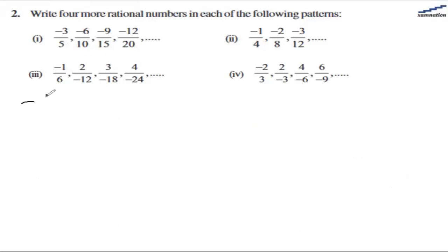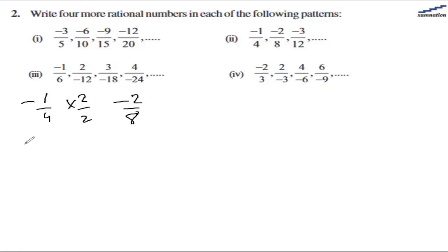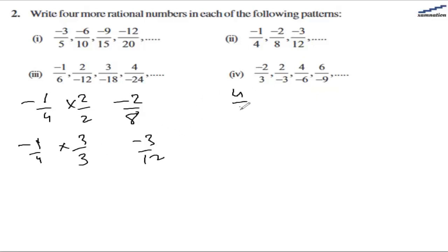For the second part, let us figure out the pattern. The first number is -1/4 and the second number is -2/8. The relation is simple: we have multiplied both numerator and denominator by 2 to get -2/8. Likewise, multiplying by 3 gives -3/12, which is the third term. So to find the next 4 numbers we multiply by 4/4, 5/5, 6/6, and 7/7.